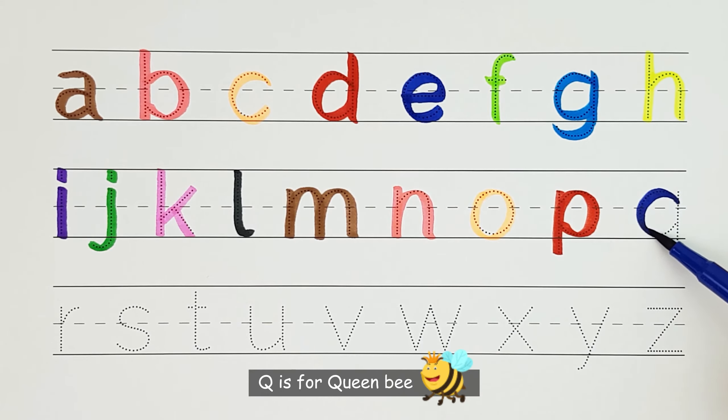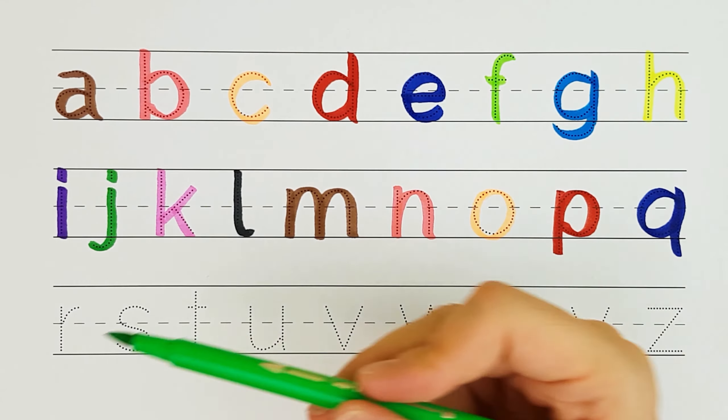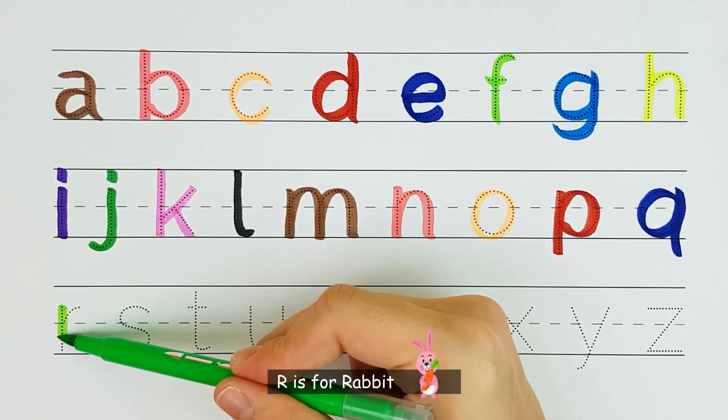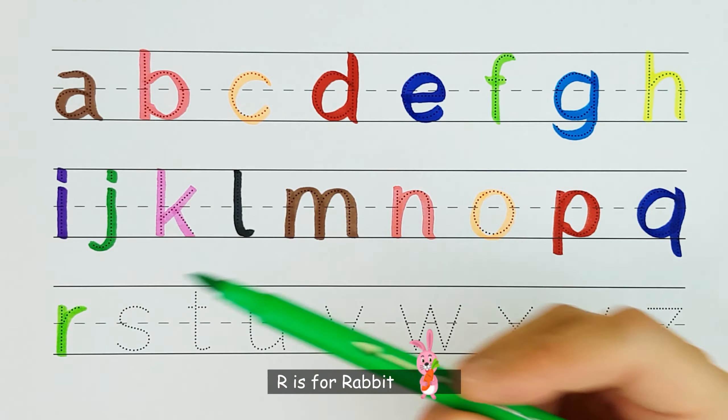Q. Q is for queen bee. Q. R. R is for rabbit. R.